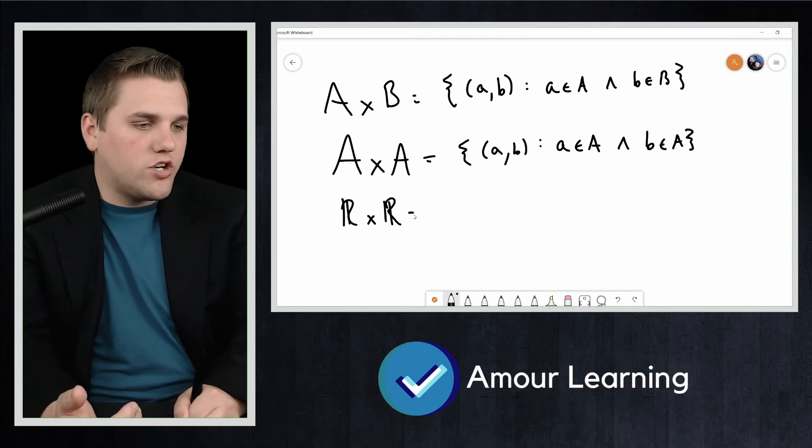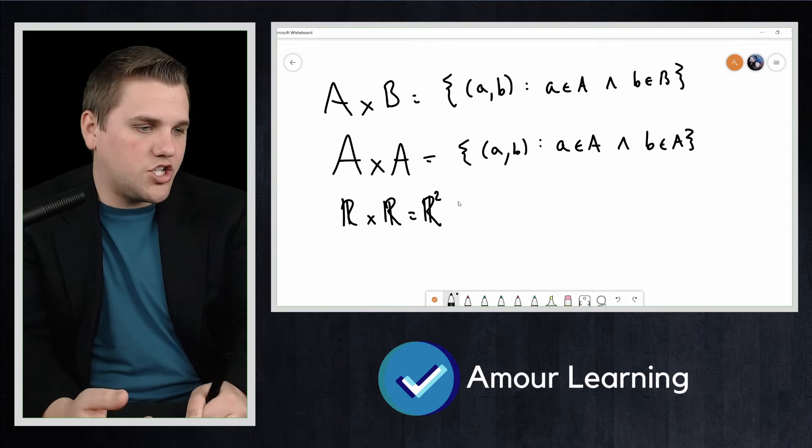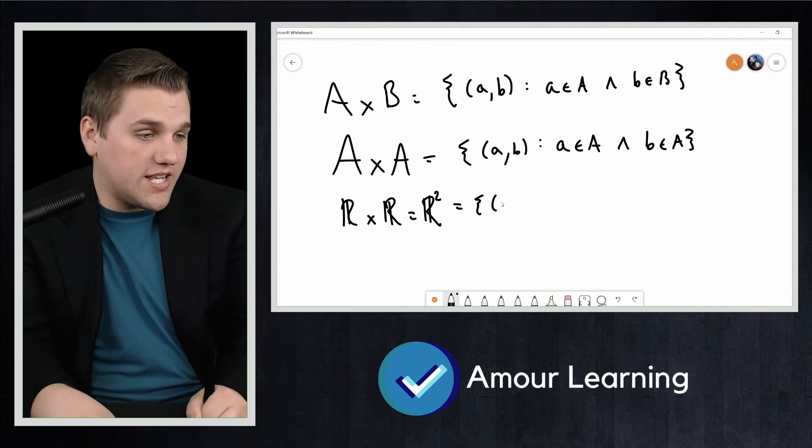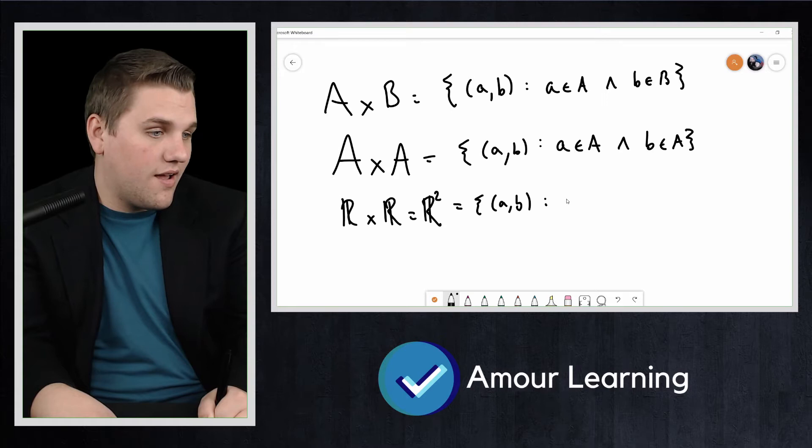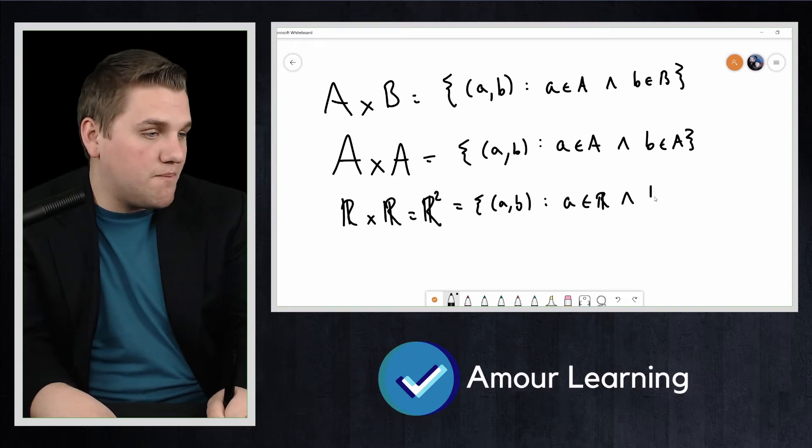So in this case, R cross R, which is sometimes seen as R², is the set of all coordinates (a,b) where a is a real number and b is a real number.